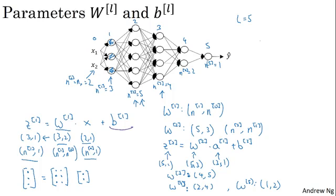So the general formula to check is that when you're implementing the matrix for a layer L, that the dimension of that matrix be nl by nl minus 1.